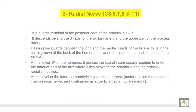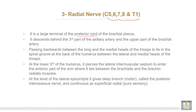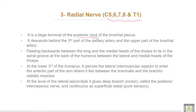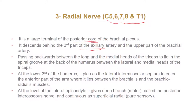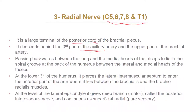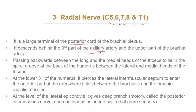The third is the radial nerve, which arises from all roots of the brachial plexus. It is a large terminal branch of the posterior cord. It descends behind the third part of the axillary artery and the upper part of the brachial artery, passing backward between the long and medial heads of the triceps to lie in the spiral groove at the back of the humerus, between the lateral and medial heads of the triceps muscle.